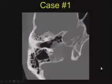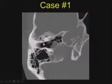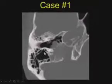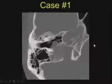We have an axial CT through the temporal bone. It looks like we're at the level of the external auditory canal — maybe a large mastoid antrum. Here's the horizontal segment of the carotid, and we have a lesion at that location.